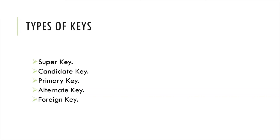First, we identify the super key — it is the set of all columns that can help us uniquely identify each and every record. Then we identify the candidate key, which is the minimum requirement from the super key — the smallest set of columns that can still uniquely identify every row.